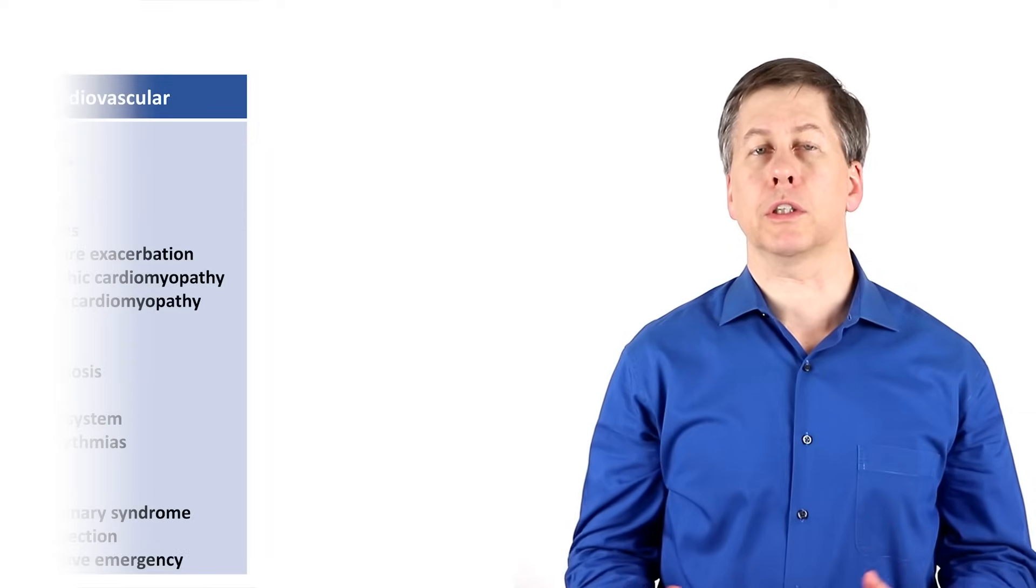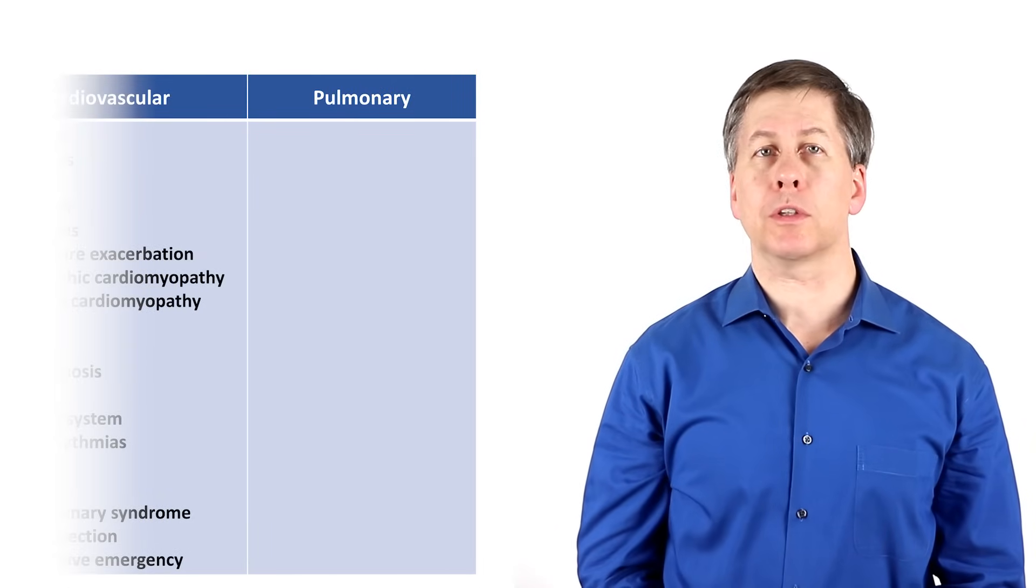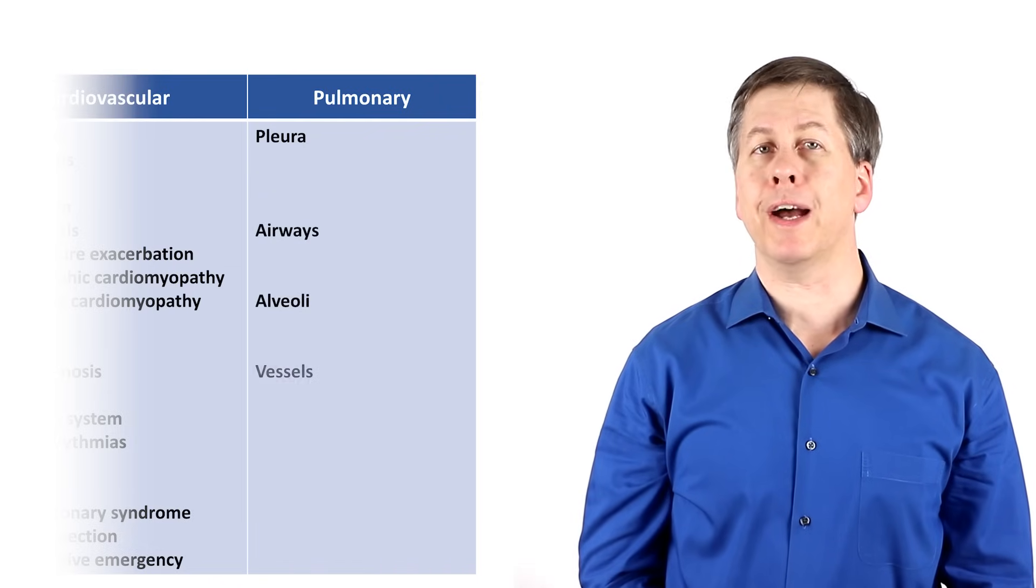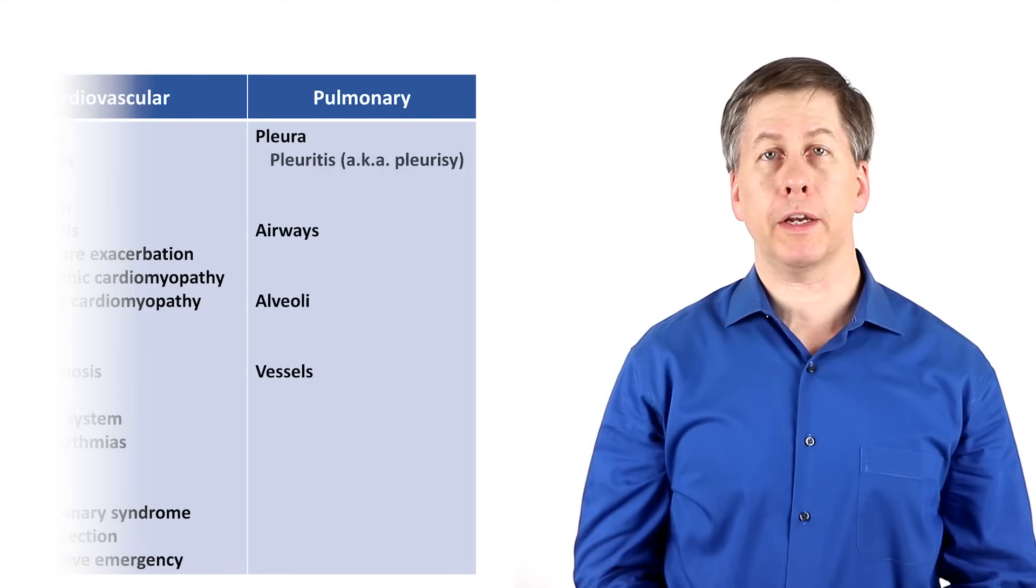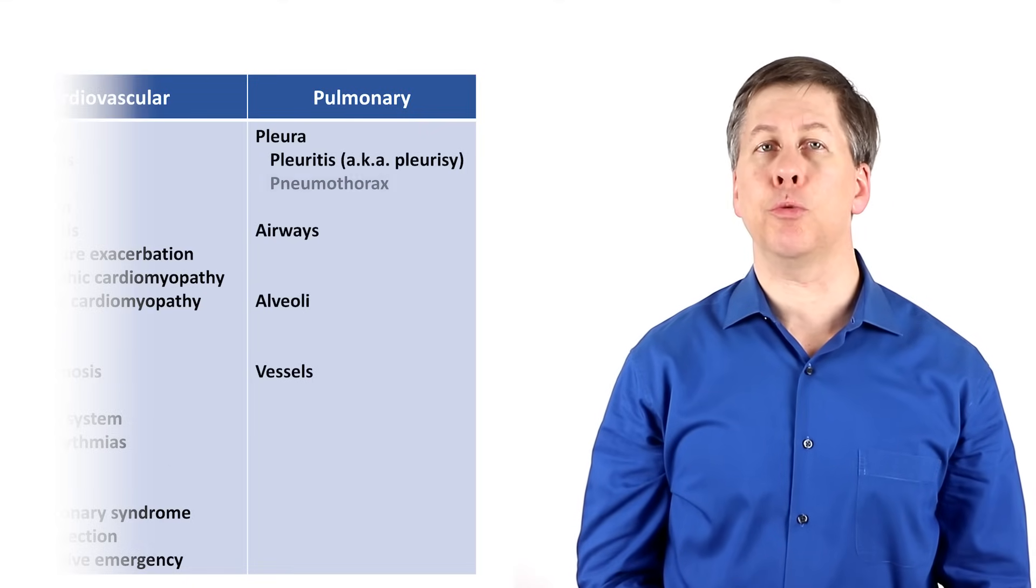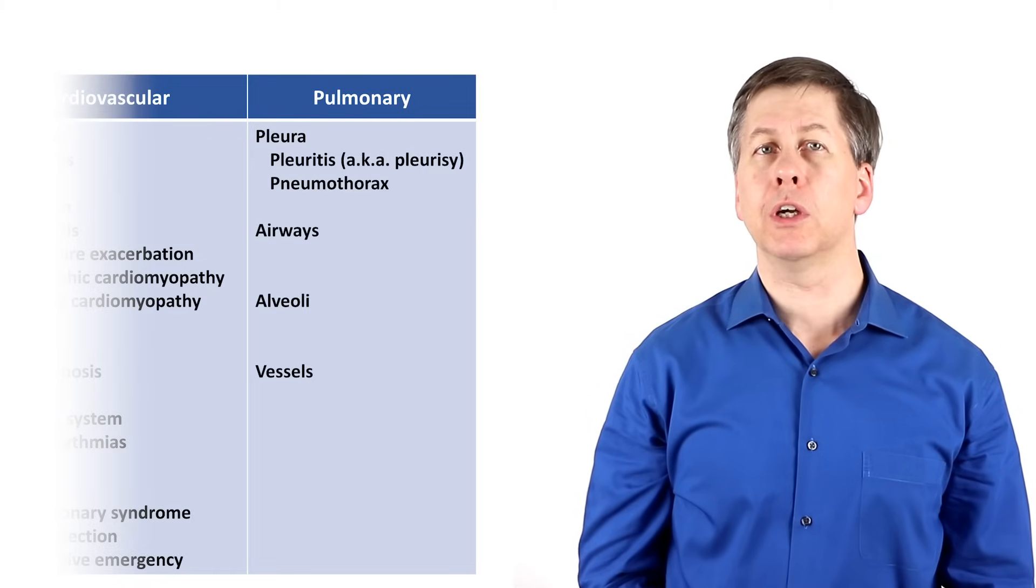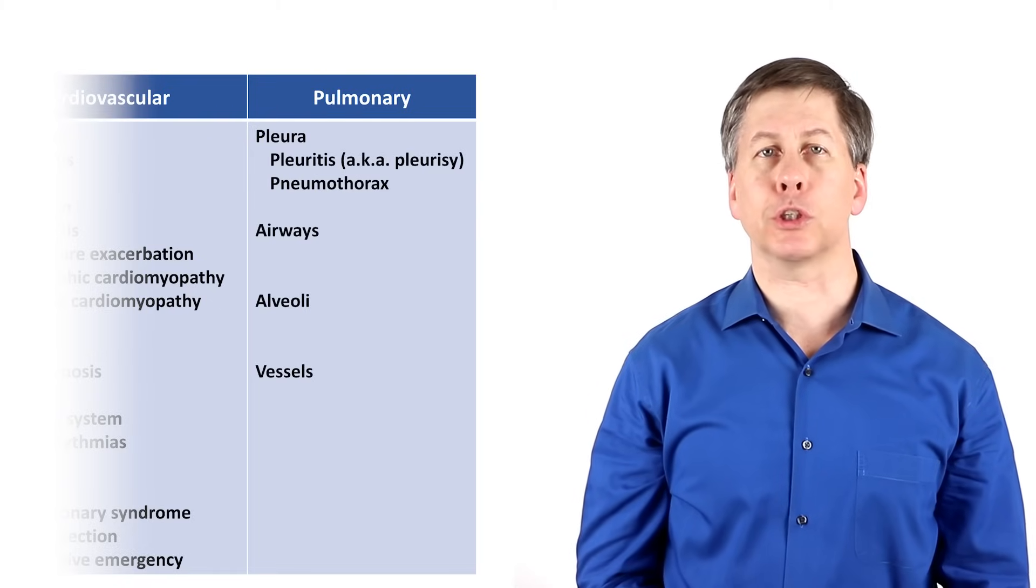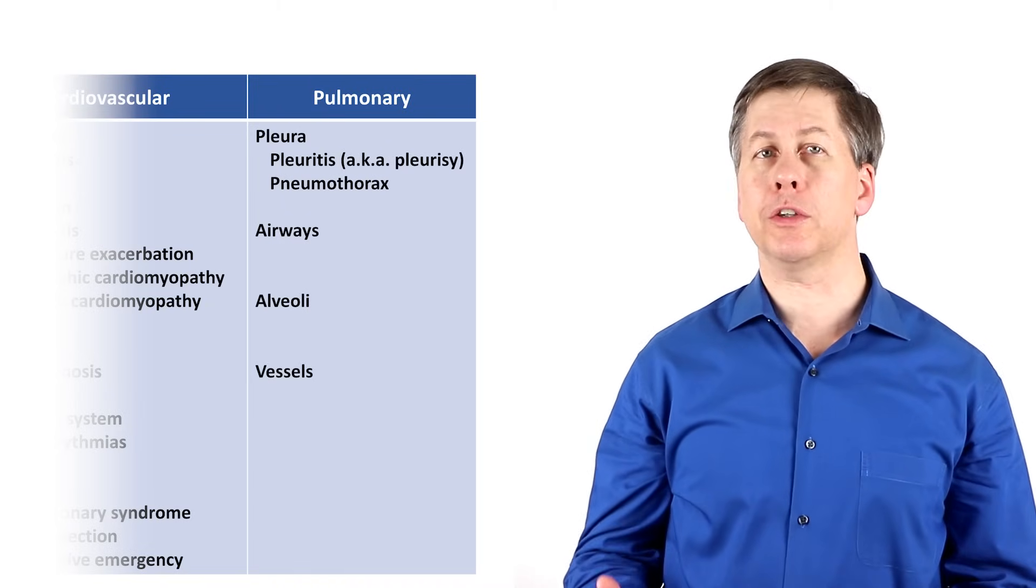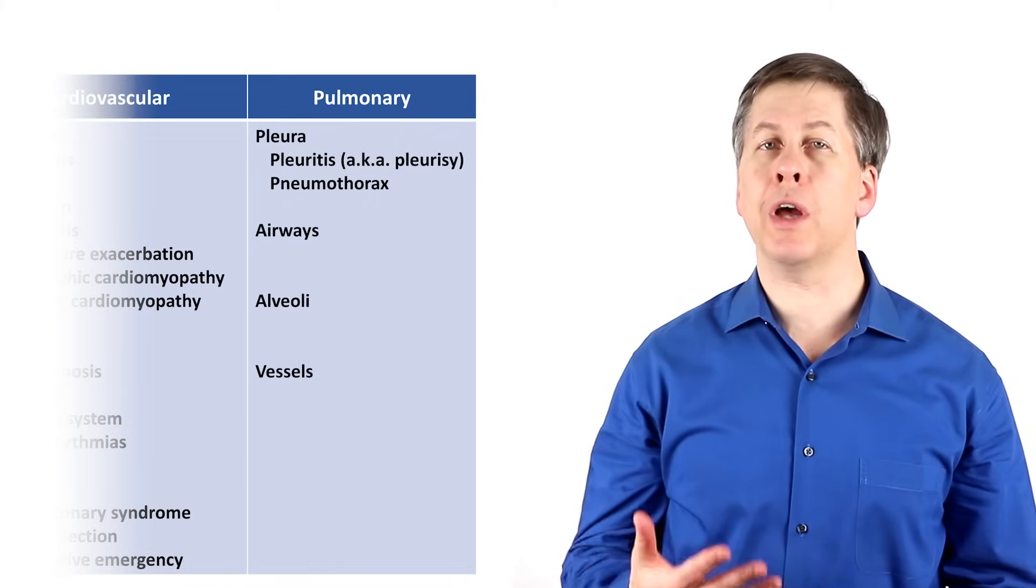Let's move on to the lungs. The relevant functional components of the lungs include the pleura, the alveoli, the airways, and the pulmonary vasculature. Pleuritis, also known as pleurisy, can cause chest pain, as can a pneumothorax, which is when a tear or hole in one of the pleural layers results in air getting into the pleural space. Pleural effusions, in the absence of concurrent inflammation, usually do not cause pain.